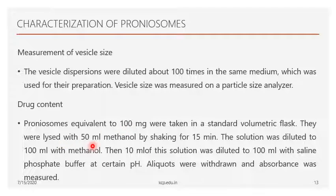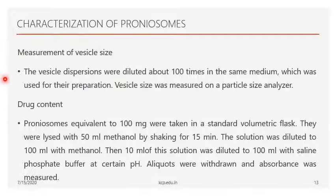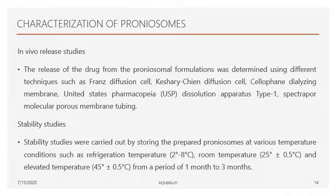For drug content, 100 milligrams of sample is taken in a volumetric flask and dissolved with 50 ml of methanol. After complete shaking, the drug content is completely dissolved in the methanol. The solution is made up to 100 ml with methanol, and from this stock solution, 10 ml is diluted to 100 ml of phosphate buffer. Aliquots are withdrawn and analyzed using a suitable analytical instrument — either UV spectrophotometry or HPLC — to determine the amount of drug.